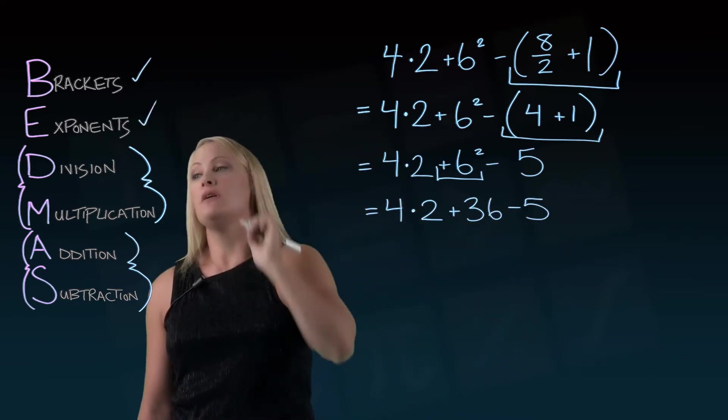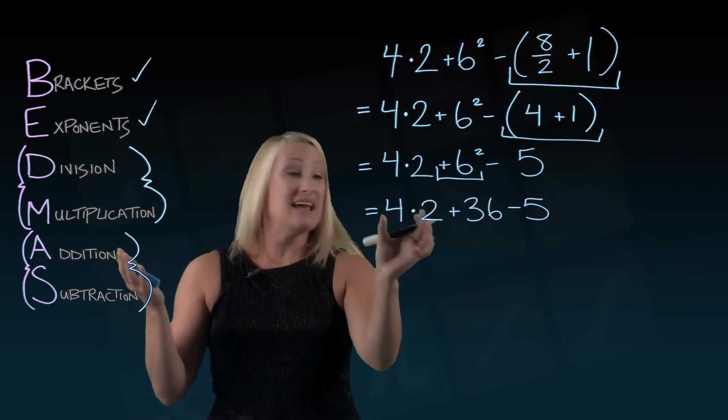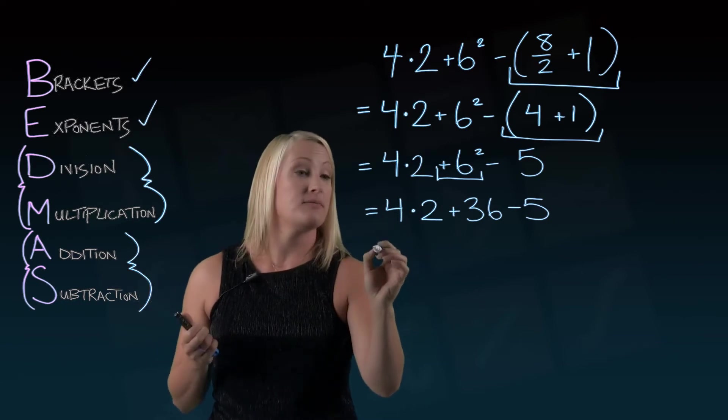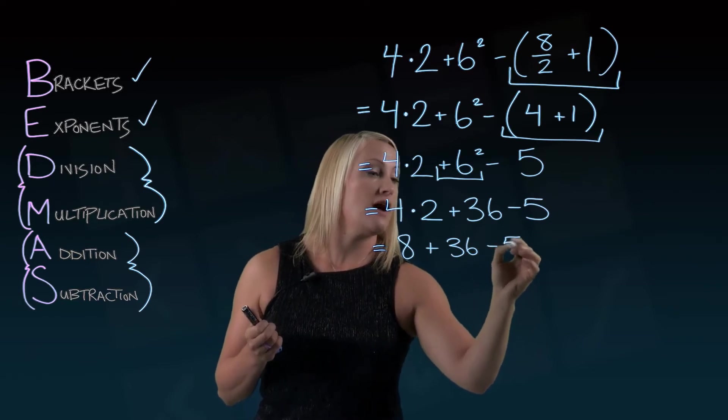So we've dealt with exponents. We're moving on to division and multiplication. I don't see any division here. All I see is multiplication. So I'm going to do that next. 4 times 2 is 8. Plus 36. Subtract 5.